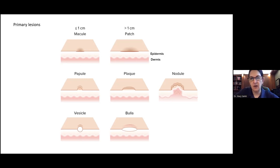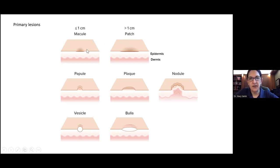We differentiate primary lesions and secondary changes. If something is completely flat, it's called a macule or a patch, depending on size — less than or greater than one centimeter. If something is raised, it's either a papule if smaller than a centimeter or a plaque if greater. And at some point, it's big and deep like a large cyst — we call that a nodule. Blisters can be small vesicles or large bullae, and in a blistering condition you might have both.